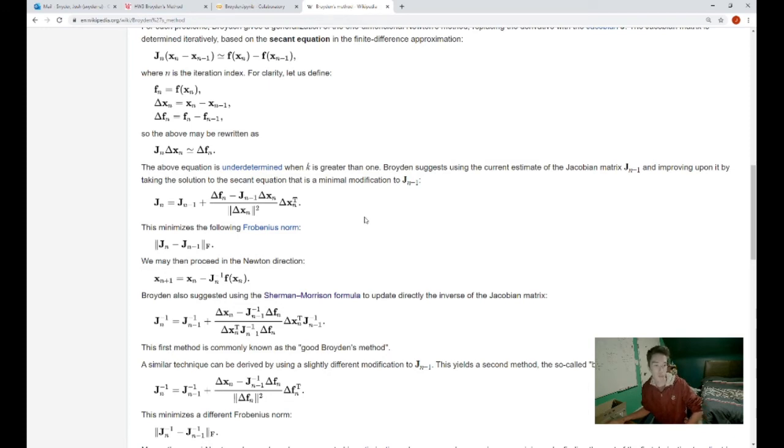So what we're going to be doing here is we're going to say that our new Jacobian is equal to the previous Jacobian plus the change in our function minus the previous Jacobian times the change in our x values